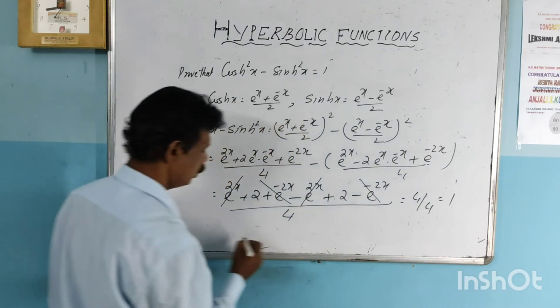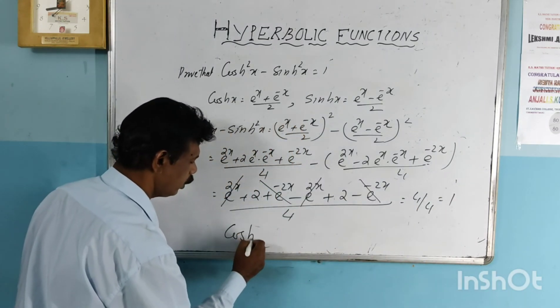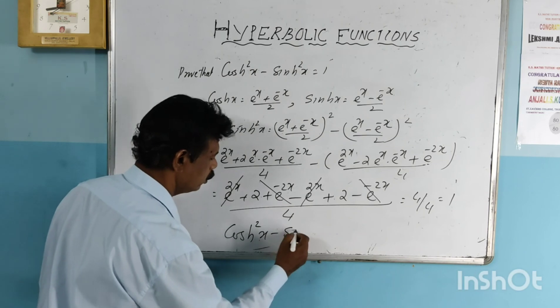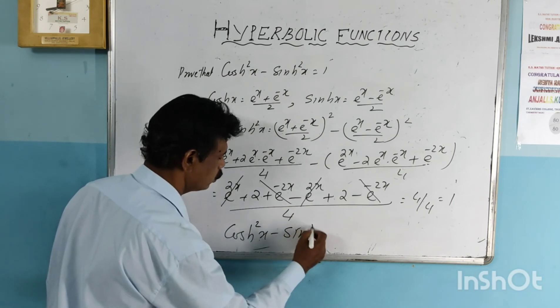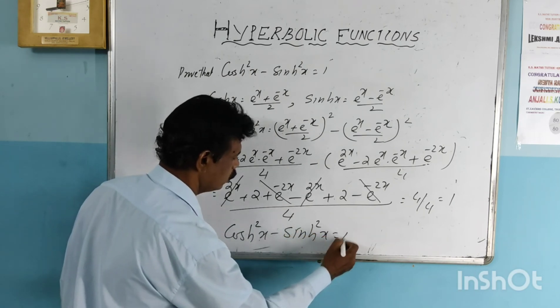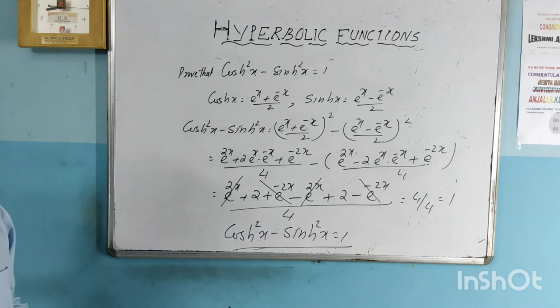So we can write the value of cosh squared x minus sinh squared x is equal to 1.